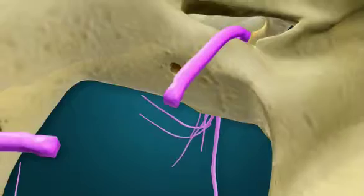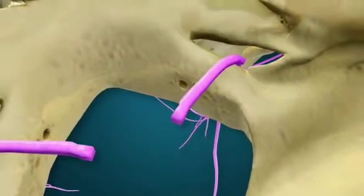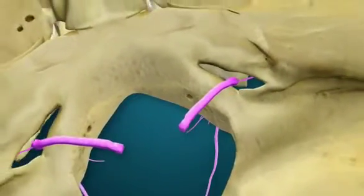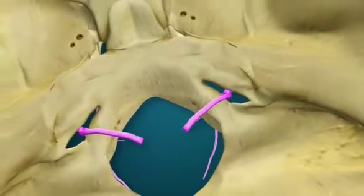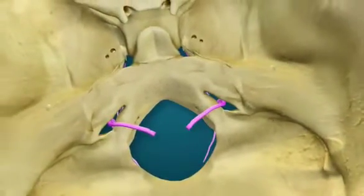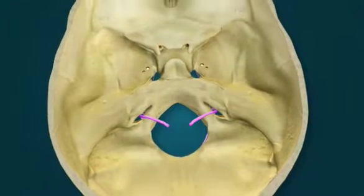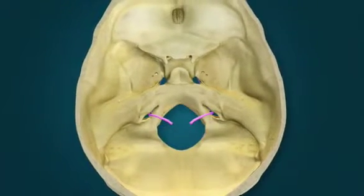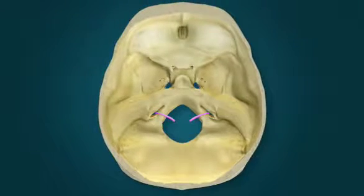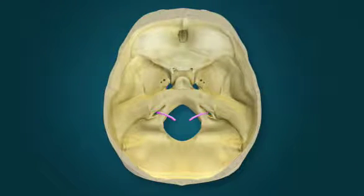Preganglionic fibers synapse in parasympathetic ganglia distributed in the mucosa of the respiratory and digestive systems. The vagus nerve also contains general sensory fibers and somatic motor fibers. Vagal fibers are accompanied by visceral sensory fibers.